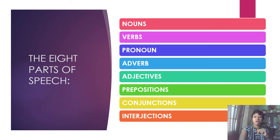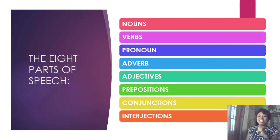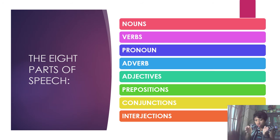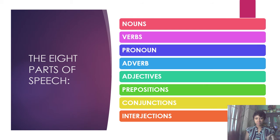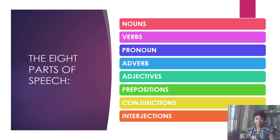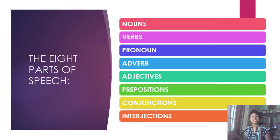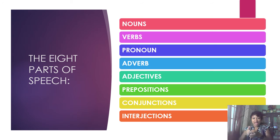Then we have our conjunctions. Conjunctions hold our sentences together. For example: 'He bought groceries at the supermarket, then he went to the gas station' — combined: 'He bought groceries and went to the gas station.' The conjunction in that sentence is 'and,' because we're connecting ideas together.